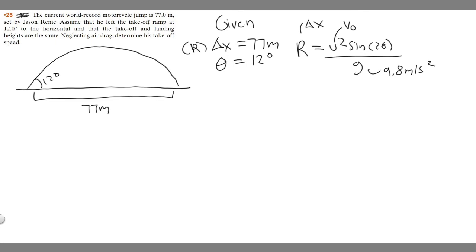Let's go ahead and plug everything in. We can actually just solve for the initial velocity. So R, which is delta x, 77 equals u squared times the sine of 2 times our angle, which is 12 degrees, so 2 times 12 is 24, over gravity, which is 9.8. If we want to solve, multiply both sides by 9.8. We're trying to get u by itself. So we'll have 9.8 times 77 equals u squared times the sine of 24. If we divide both sides by the sine of 24, you'll get u squared equals 9.8 times 77 divided by the sine of 24.